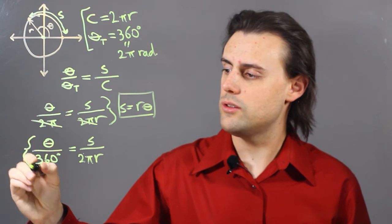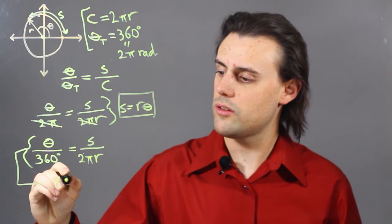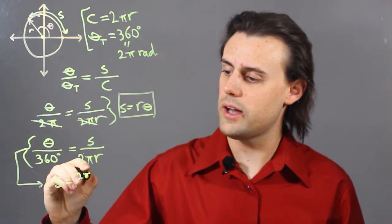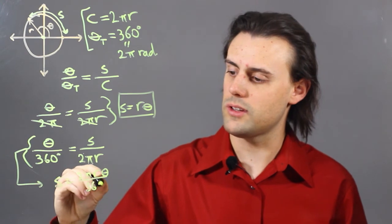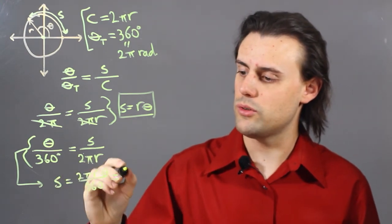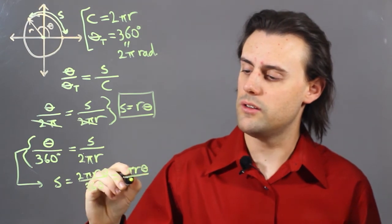And if I use degrees to measure my angle, then my arc length would be equal to 2πr theta divided by 360, which is equal to πr theta divided by 180.